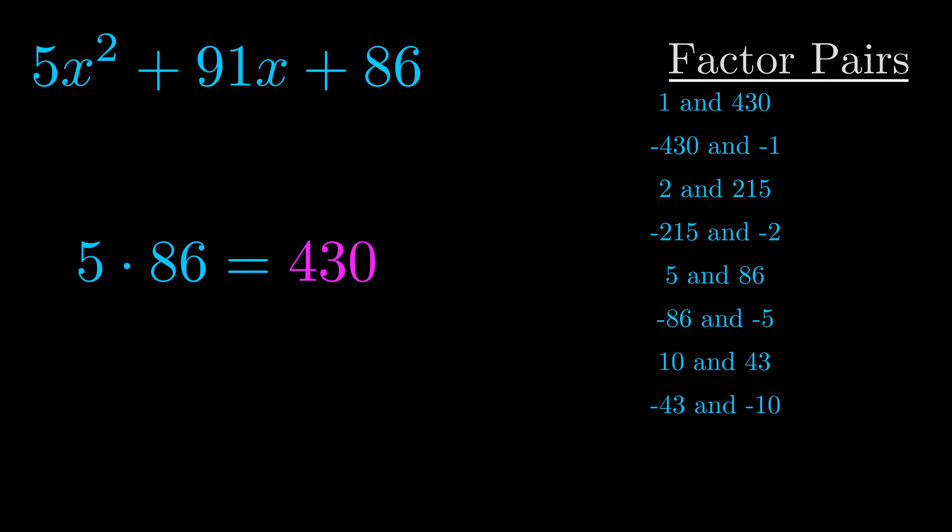The b value is the coefficient on the x term. That's the middle term, the one that we haven't done anything with yet. And really this is the only factor pair that we need.